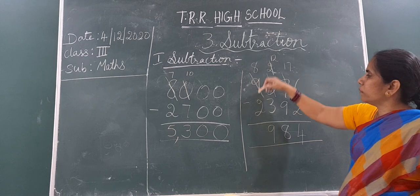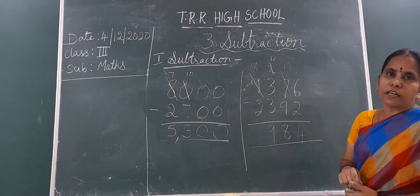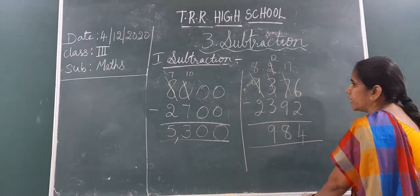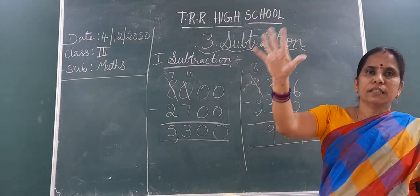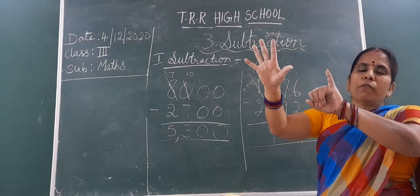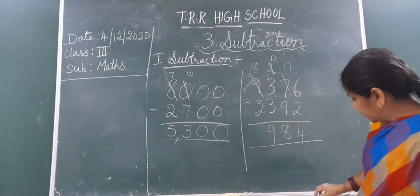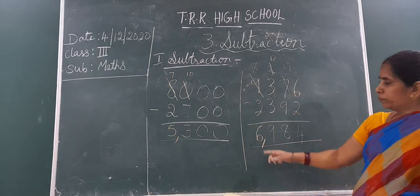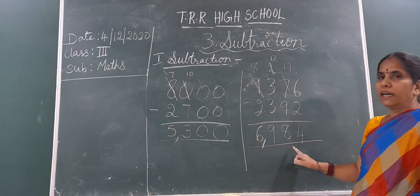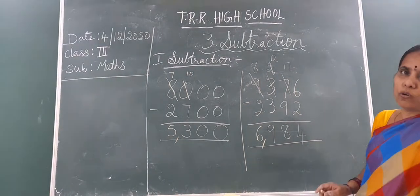Now, go to the thousands place. 8 minus 2. 8 is greater only. So, again close fingers. 2 after 3, 4, 5, 6, 7 and 8. How many fingers you open? 6 fingers. Write 6 here in the thousands place. After 3 distance you put comma. The answer is 6,984. Okay.